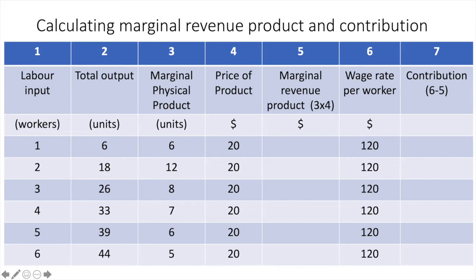In column 5 we have marginal revenue product. Marginal revenue product is the additional amount of revenue earned by a firm after employing an additional unit of labour. We can calculate that by taking the marginal physical product and multiplying it by the product price. For the first worker, we multiply 6 times $20 for a marginal revenue product of $120. Once the second worker has been employed, our marginal revenue product is equal to 12 times 20, which is $240. We continue this through the sixth worker whose MRP is equal to $100.